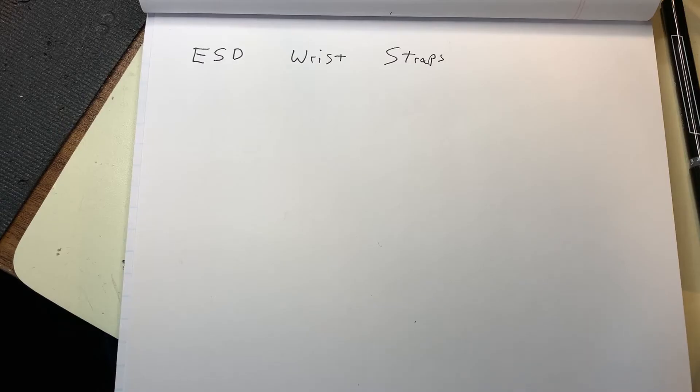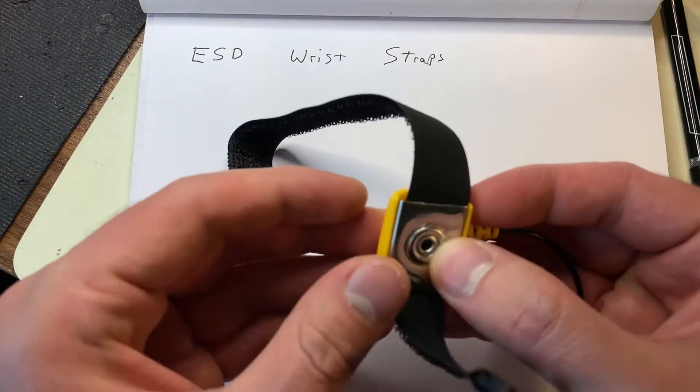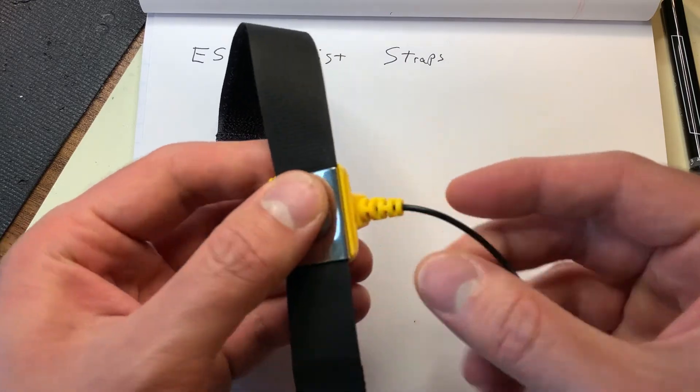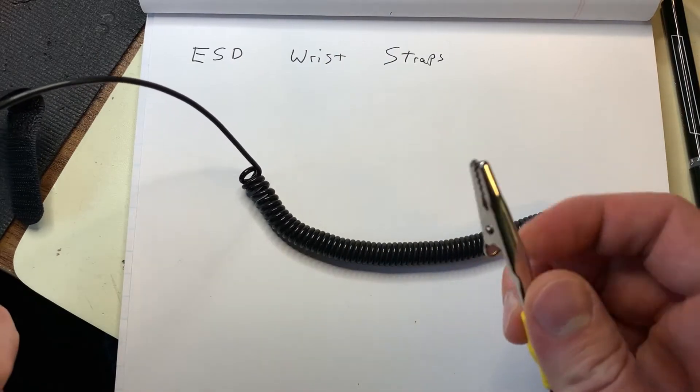In this video I'd like to talk about ESD wrist straps, which are these right here. You may have seen or used these before. Basically it's just a wrist strap with a metal electrode at the end of it with a detachable wire that goes to an alligator clip on the other end.